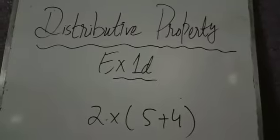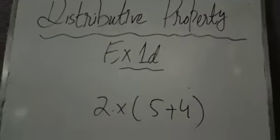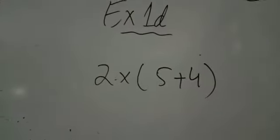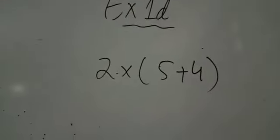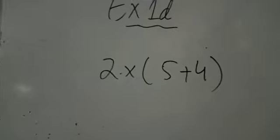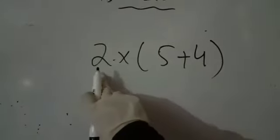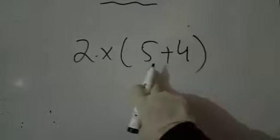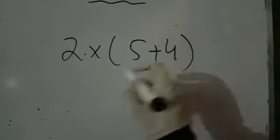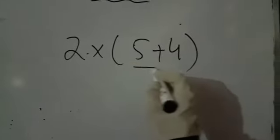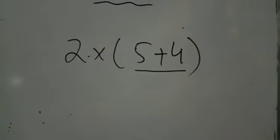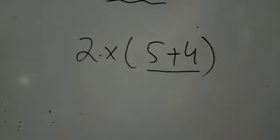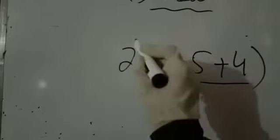Here an expression is given. According to distributive property, when a number multiplies with the sum of two numbers, it gives the same result as if the number is multiplied by each individually.